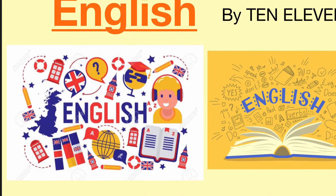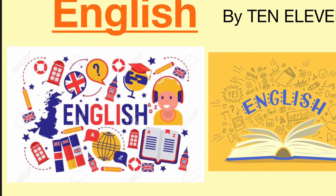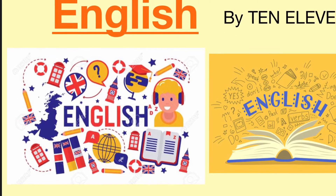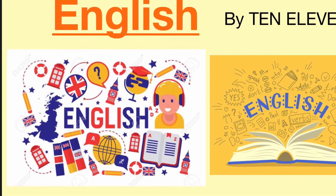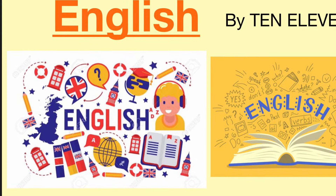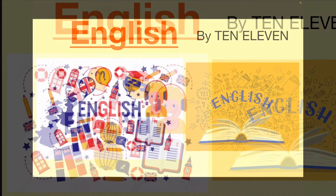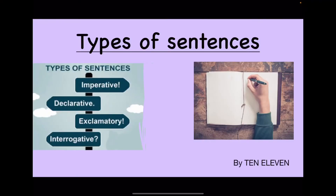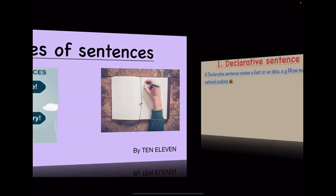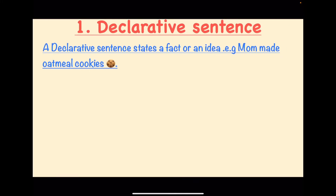Hey guys, welcome back to 10/11. This is the English class in which I will be telling you types of sentences and how to describe things. The four types of sentences are: imperative, declarative, exclamatory, and interrogative.